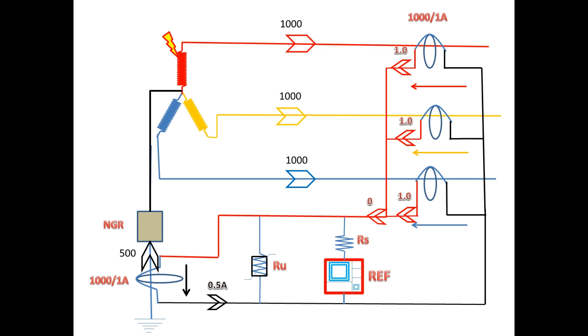Now let's see the current path. First, keep in mind that current always tries to take the lowest resistance path. Now we consider the current trying to flow outside, that is through the core balance CT. On the core balance CT, all three phase secondary CTs are carrying 1 amp each, and there is no unbalanced current.